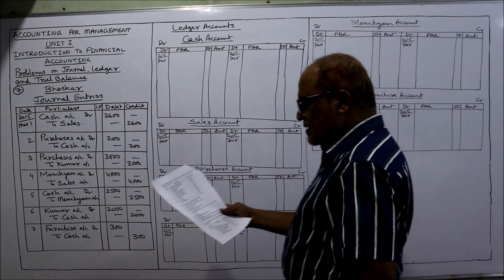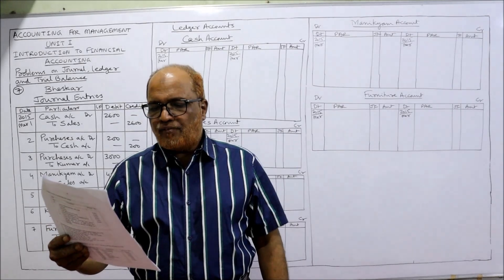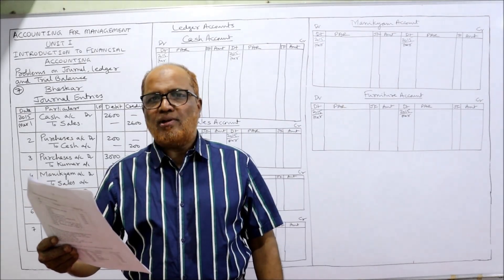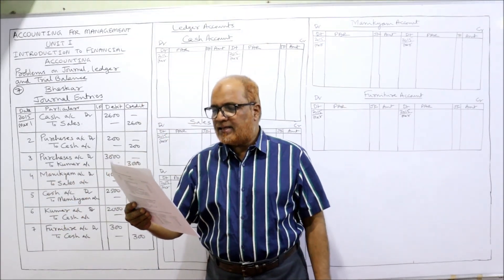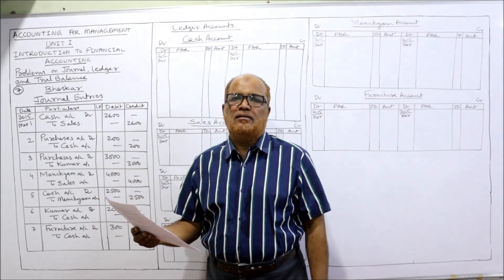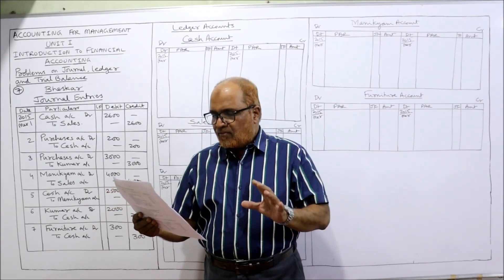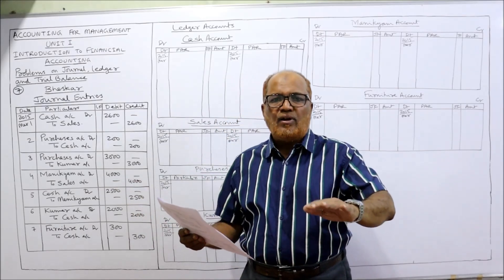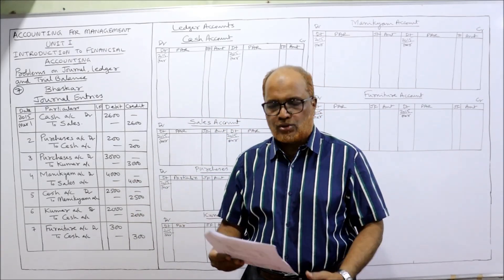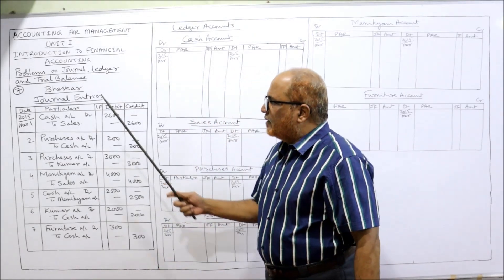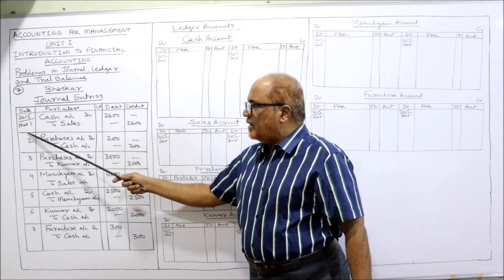Now see the seventh problem: from the following transactions, write journal entries and post them into the ledger in the books of Bhaskar. Bhaskar is the owner of the business. We have to pass the journal entries and post them into ledger accounts. So first of all, journal entries — seventh problem, Bhaskar general entries.